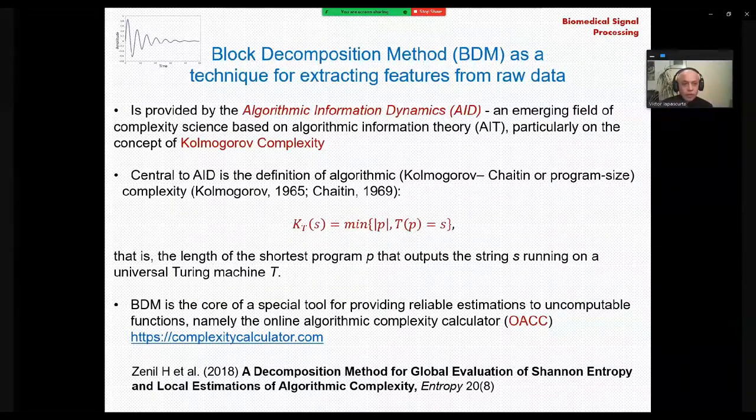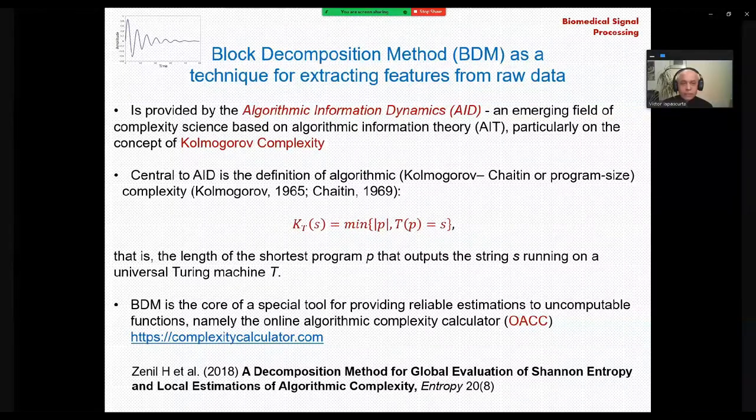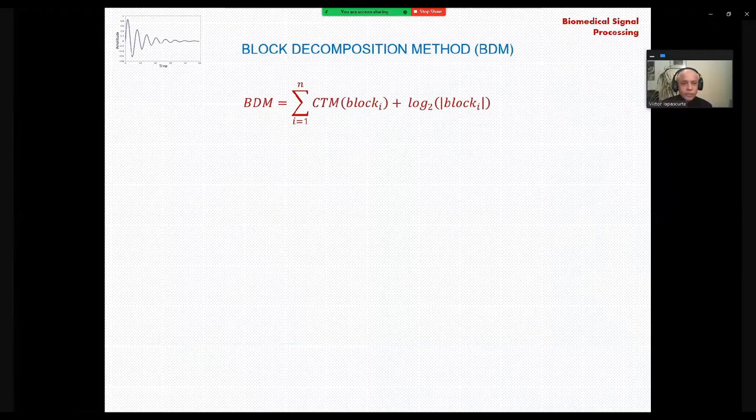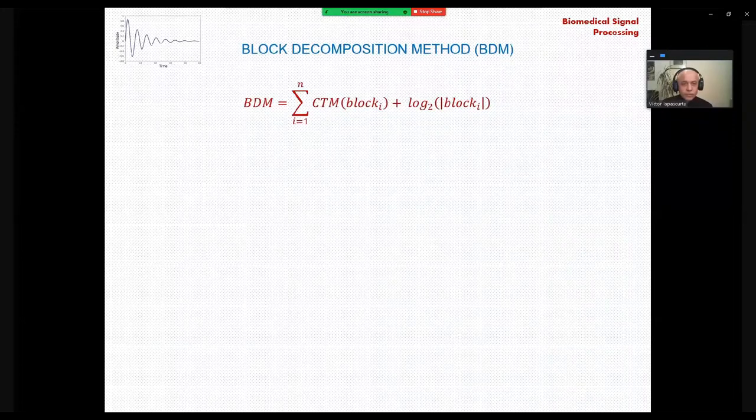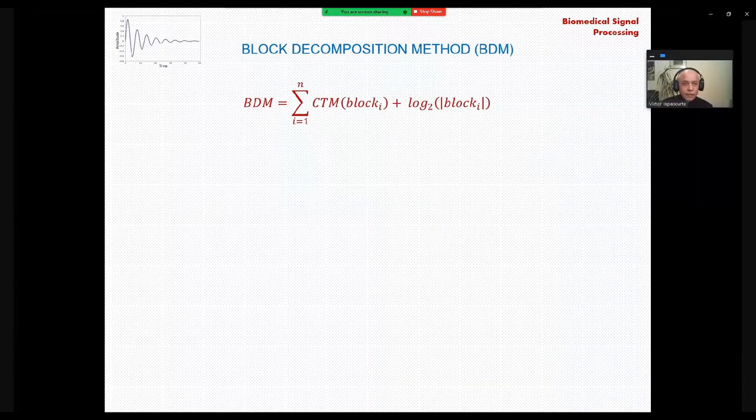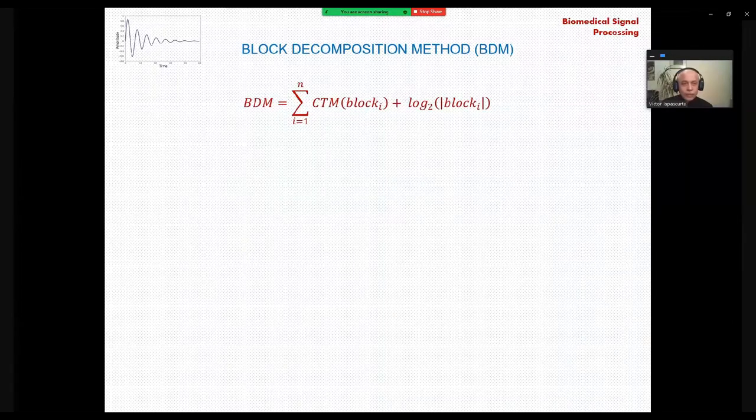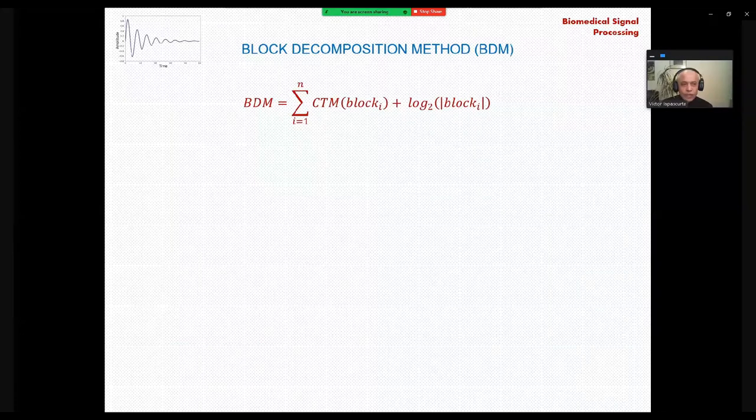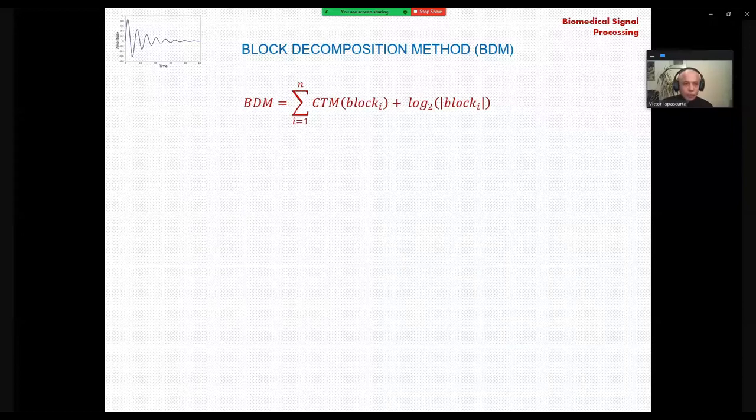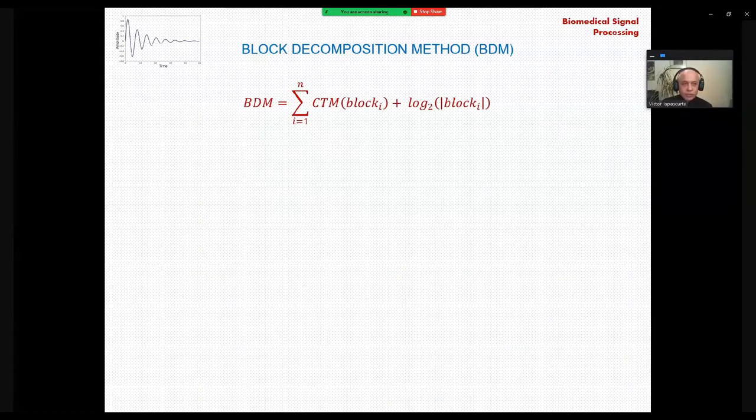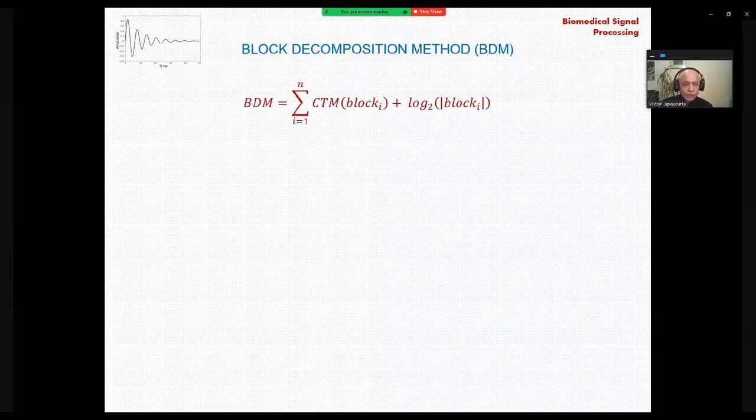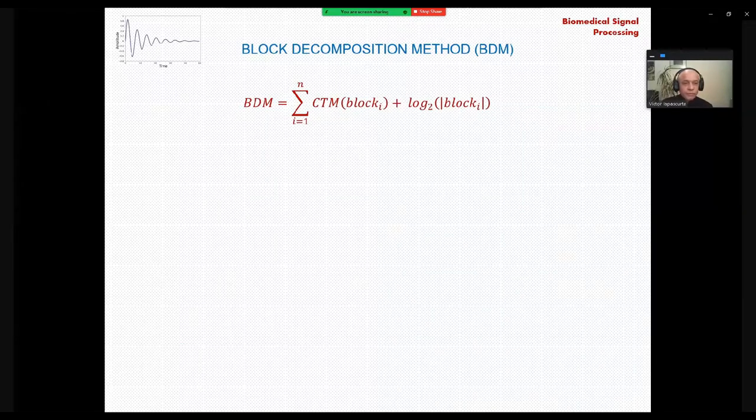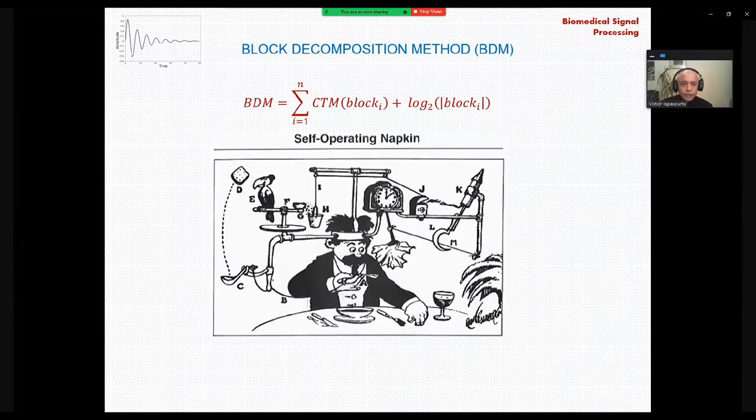Speaking about block decomposition method, you can see the mathematical representation of this method, and as you can see, it is based on the coding theorem method, by which we can calculate the complexity of small blocks. For this method we are dividing a larger object into small blocks, calculating complexity of these blocks, and summing these complexities, unique values first of all, and the logarithmic representation of the repeated values. We will get the final value of the complexity of this large object.